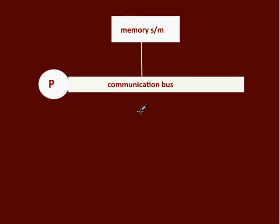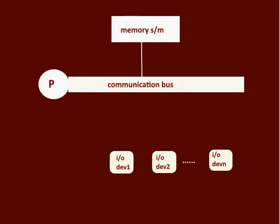A general-purpose computer should be able to communicate with a wide range of I/O devices. But the different I/O devices operate in a different way and also in a different way compared to that of the processor. For example, some devices are electro-mechanical, some are electromagnetic, and the processor is electronic. Also, the data transfer rate for each device is different from that of other devices, and almost all devices are slower compared to the processor.